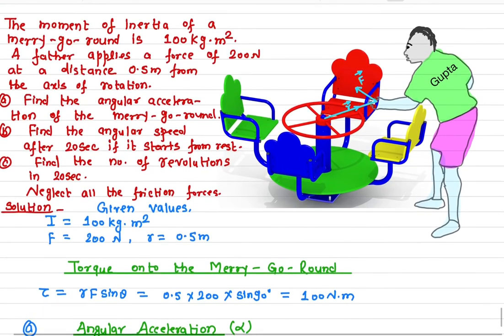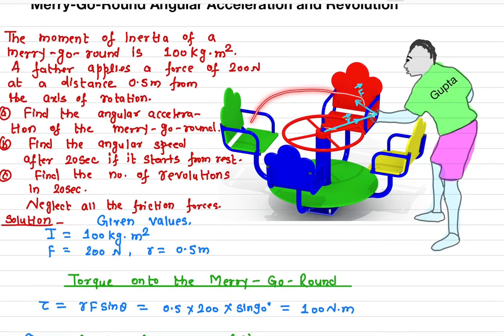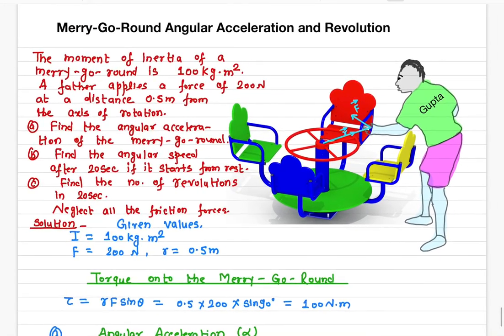So the merry-go-round makes about 32 revolutions in 20 seconds. That covers the angular speed, angular acceleration, and number of revolutions for a merry-go-round when a certain torque is applied. Note that we assumed no friction; the result would be different if frictional forces were taken into account.